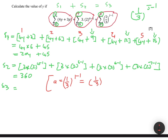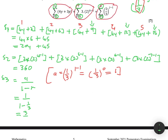Any number to the power zero equals one, so the first term a equals one. The common ratio is one divided by three, so we have a geometric sequence here. To calculate the sum to infinity, we use a divided by one minus r. With a equals one, this becomes one divided by one minus one-third. Putting that in your calculator gives three divided by two.